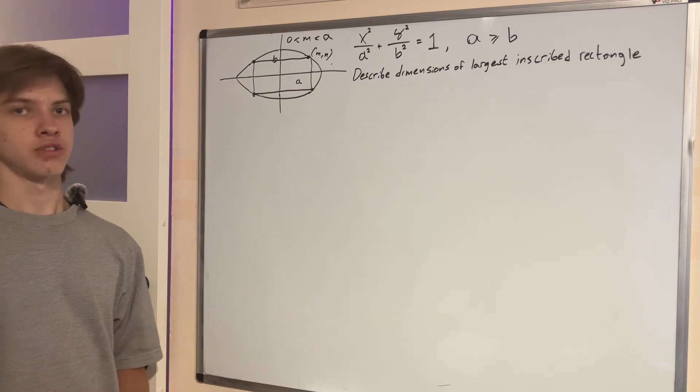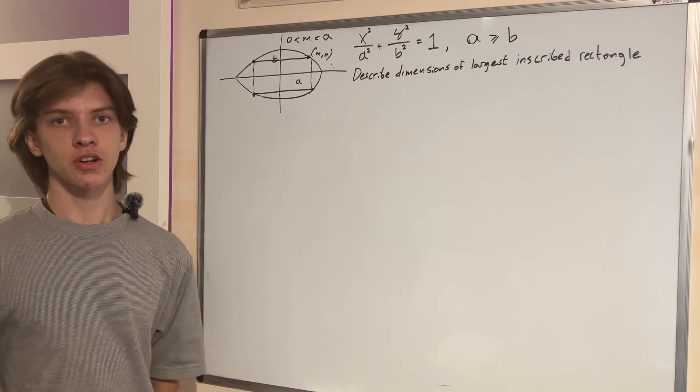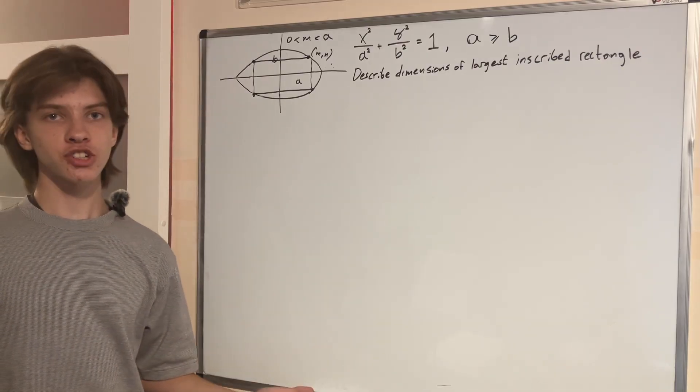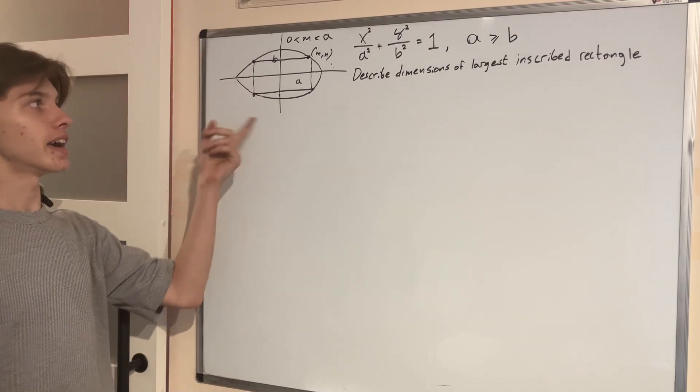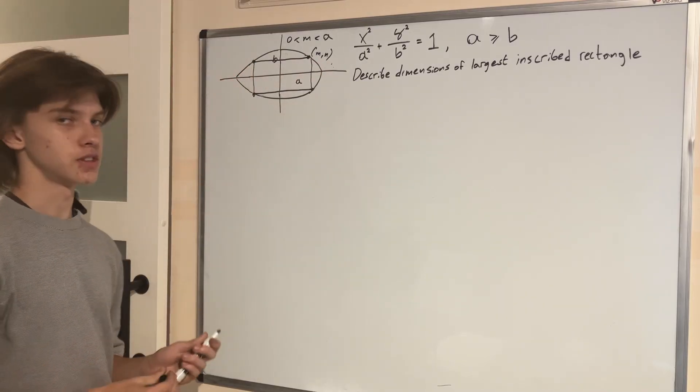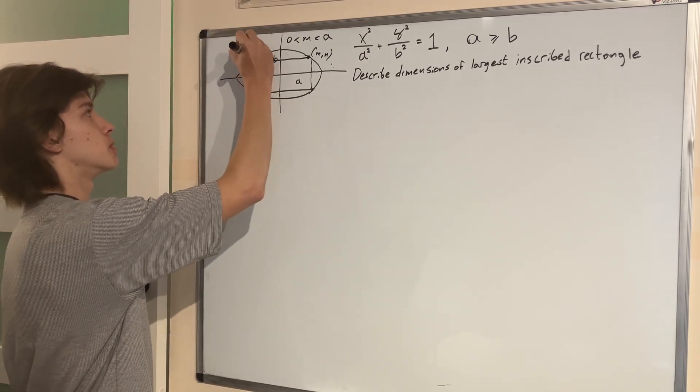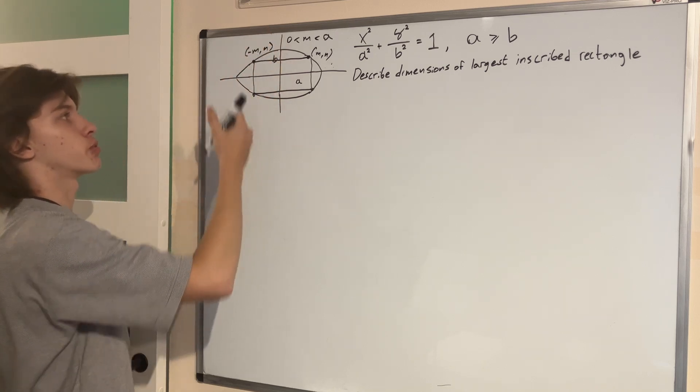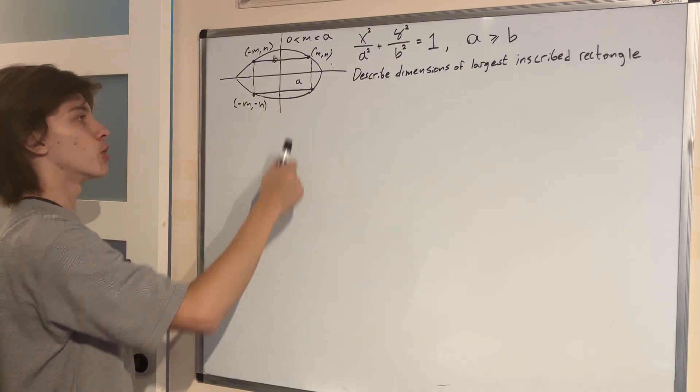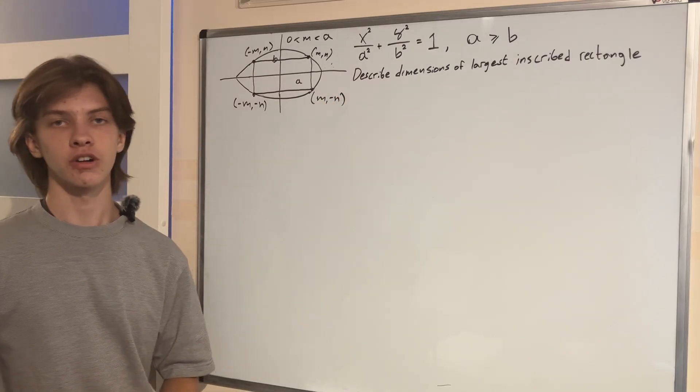So how do we know the other three vertices? Well, it is simply by the ellipse symmetry property. Remember that ellipses have symmetry about their axes. And in this case, because we centered it at the origin, its axes will simply be the Y and the X axis. So determining these other points, we are simply reflecting our points about these Y and X axes. And that is really simple. So this point right here to our left is going to be minus M, N, because we reflected it over the Y axis. Reflecting it down, we get minus M and minus N. And reflecting it again over the Y axis, we get M and minus N. So these four points will determine our rectangle.